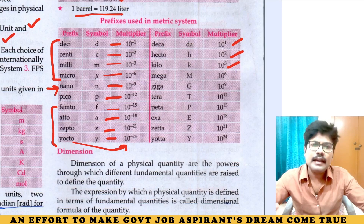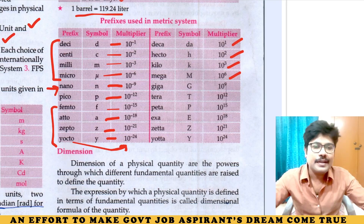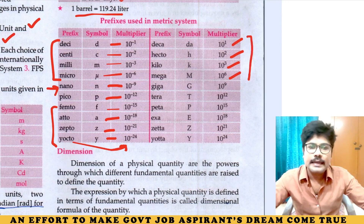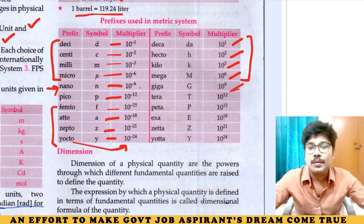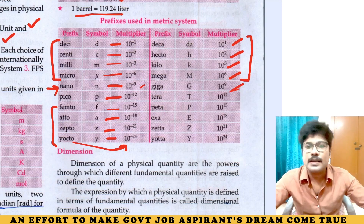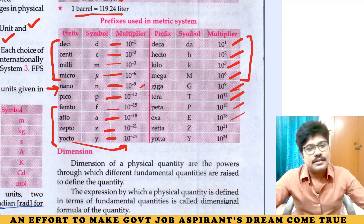Going the other way: Mega is 10 to the power of 6. Giga is 10 to the power of 9. Tera is 10 to the power of 12. Peta is 10 to the power of 15. Exa is 10 to the power of 18. Zetta is 10 to the power of 21. Yotta is 10 to the power of 24.